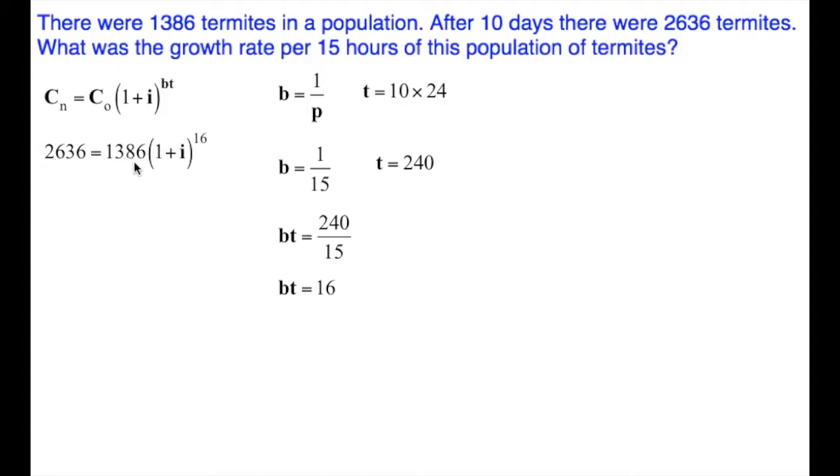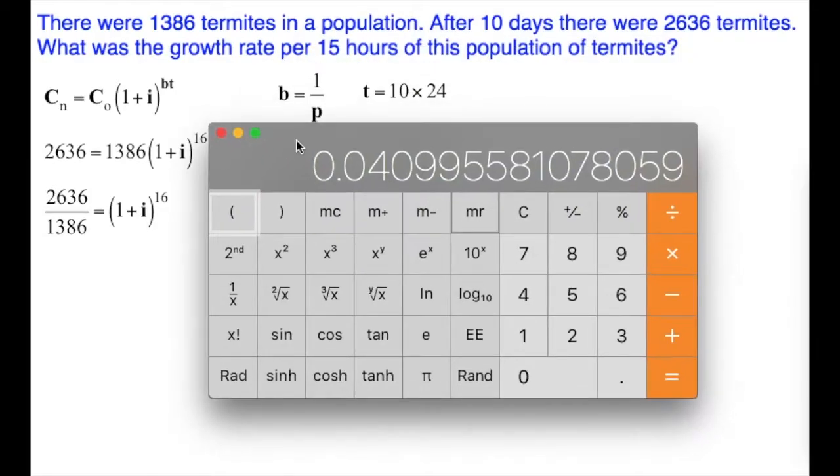I've got to get rid of this 1,386. It's multiplying the brackets, so I'm going to divide both sides by 1,386. When I divide the right-hand side, it cancels, and then we're just dividing the left-hand side. We have 2,636 divided by 1,386. It's calculator time.